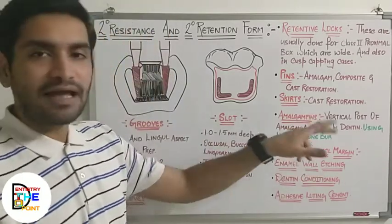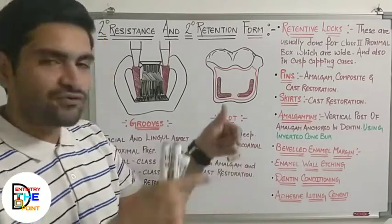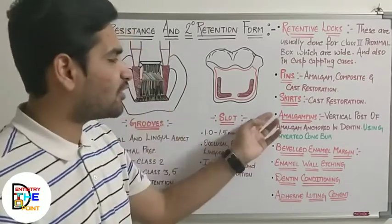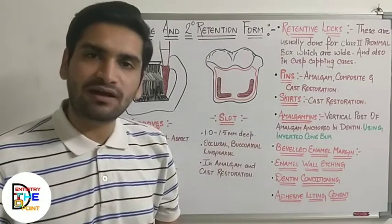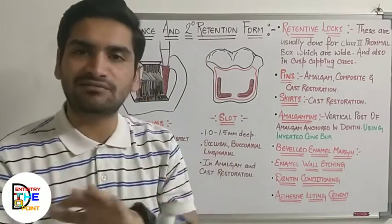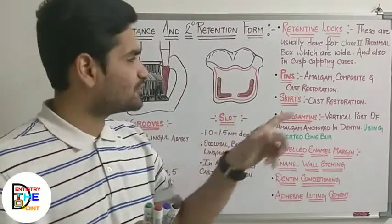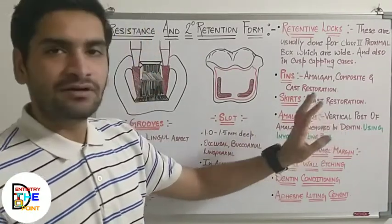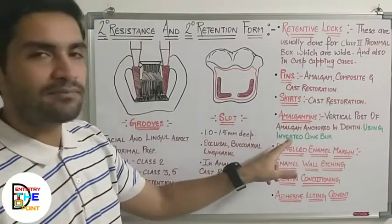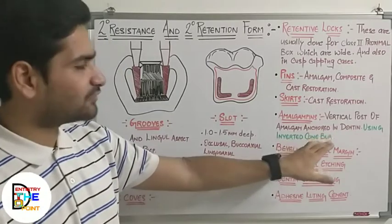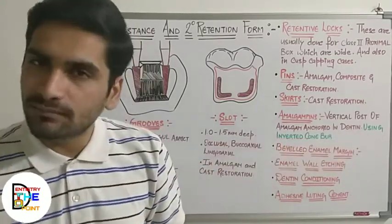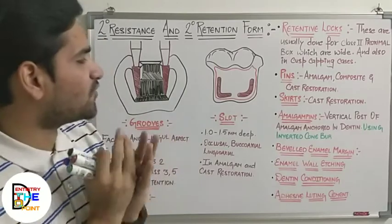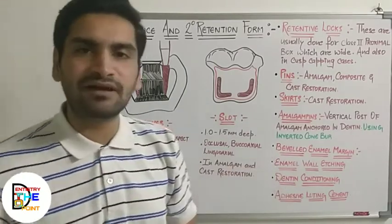Moving on to amalgam pins — you create a vertical slot in the cavity and fill that slot with amalgam along with the main cavity. The pin shape formed from amalgam is called an amalgam pin. In simple terms, it is a vertical post of amalgam anchored in dentine, always made in dentine using an inverted cone bur. You can see the diagram of amalgam pins.